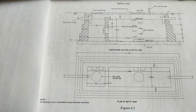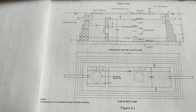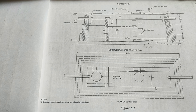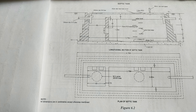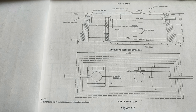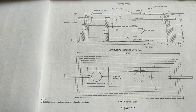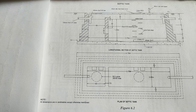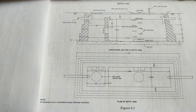Multiply all four columns for each short wall step to get quantities. For Step 2: 2 × 0.9 × 0.3 × 0.5 = 0.27 cubic meters. Add all long wall and short wall quantities together to get the total brickwork quantity.